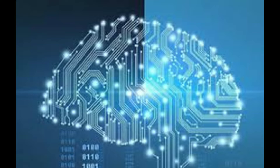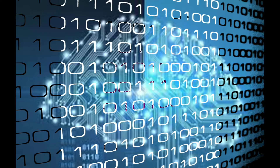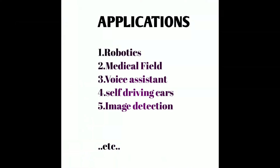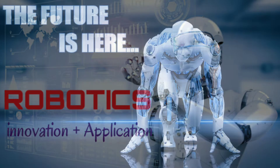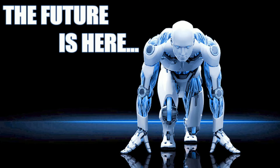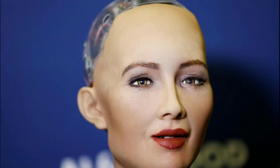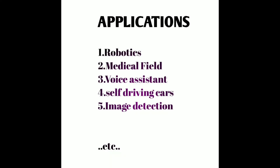These are some applications of AI. The first one is robotics. In robots, AI, machine learning, and deep neural networking are all implemented to perform specific tasks or to fulfill the needs of humans. Robots are very powerful in thinking and processing.